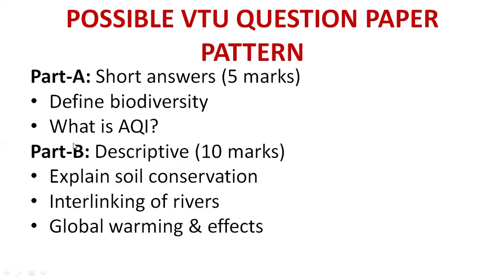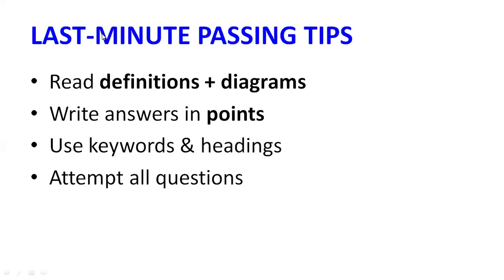Repeated questions include: explain global warming, what is EIA, and case studies on thermal power plants. For Part A: define biodiversity, AQI, etc. For Part B: soil conservation, interlinking of rivers, global warming and effects. If preparing at the last moment, read definitions and diagrams as mentioned. Write answers in brief points using keywords and headings.